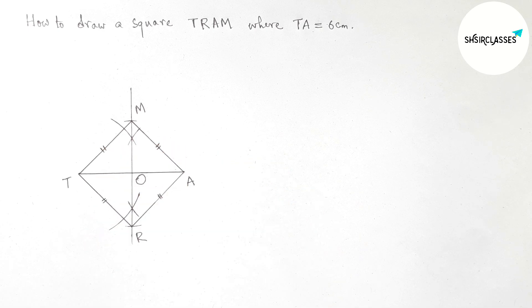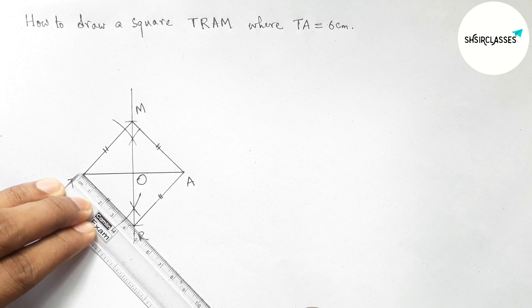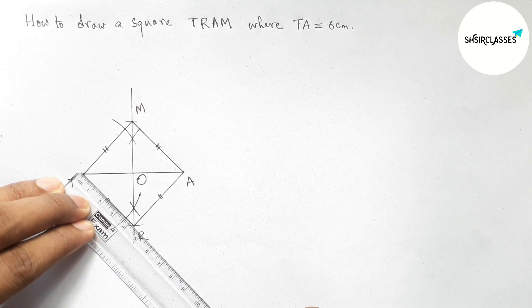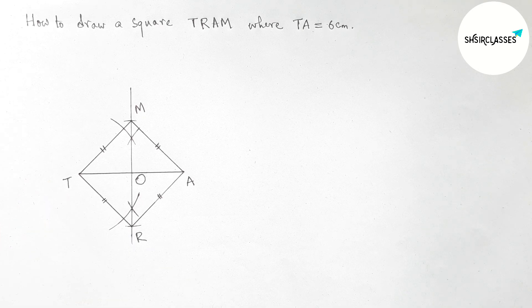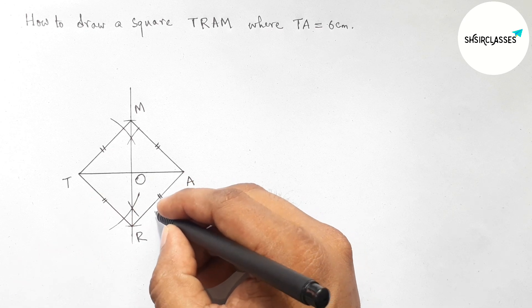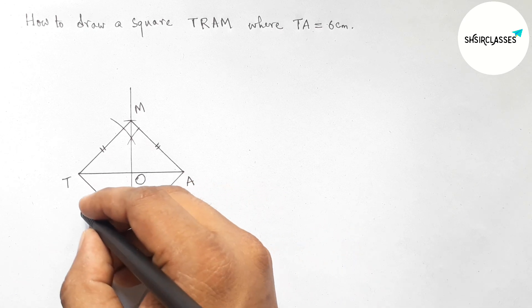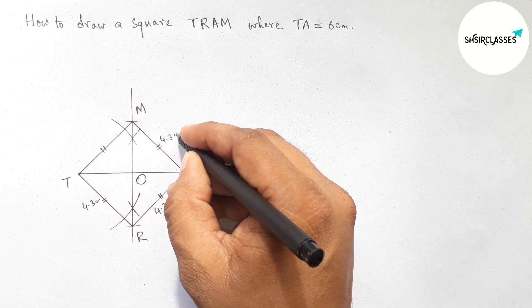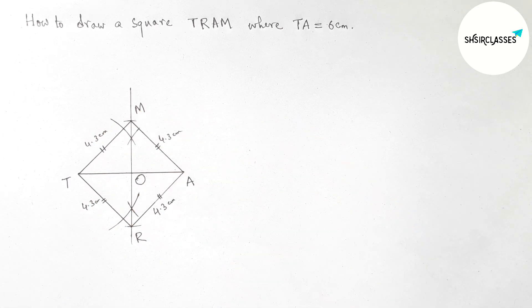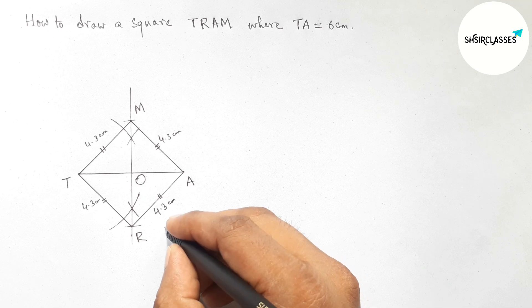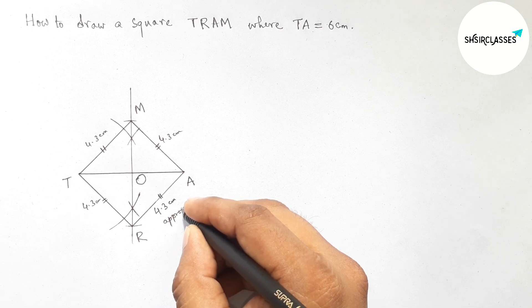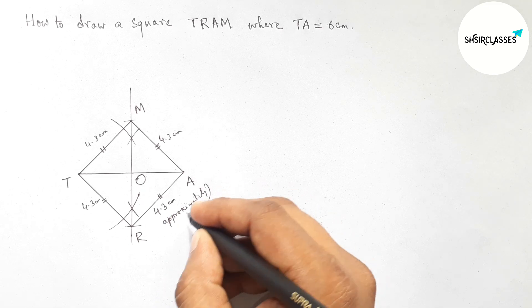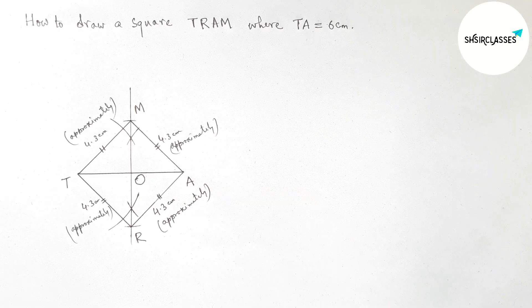So write down equal symbols on each side of the square. Now measuring the length of each side, so here approximately 4.3 centimeters length of each side of the square. So all the sides 4.3 centimeters approximately. It sometimes varies.